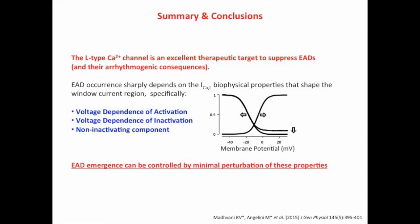The L-type calcium channel is an excellent therapeutic target to suppress early after depolarizations and their arrhythmogenic consequences. EAD occurrence sharply depends on the L-type calcium current biophysical properties that shape the window current region, specifically the voltage dependence of activation, voltage dependence of inactivation, and the non-inactivating component. Therefore, we conclude that EAD emergence can be controlled by the minimal perturbation of these properties.